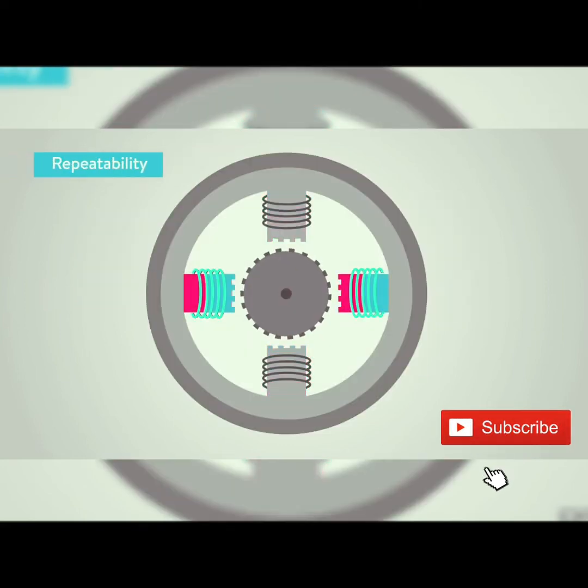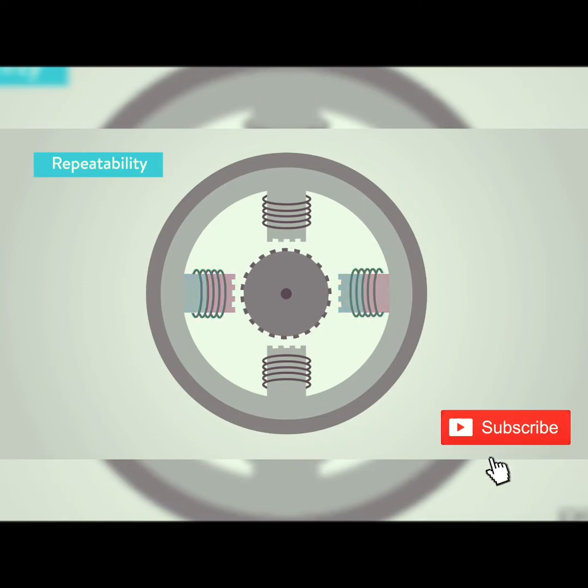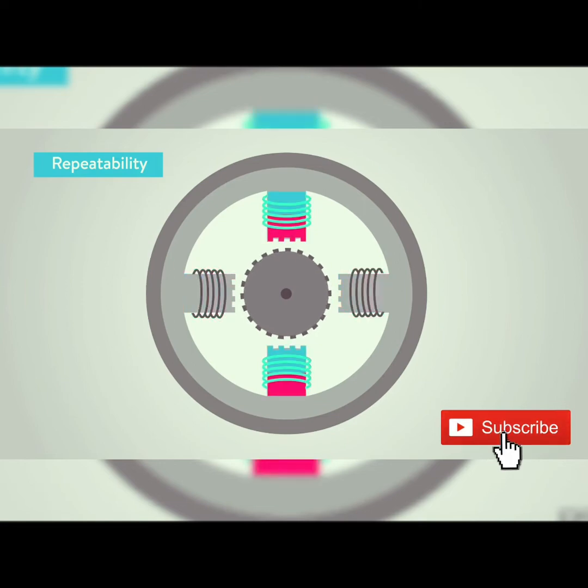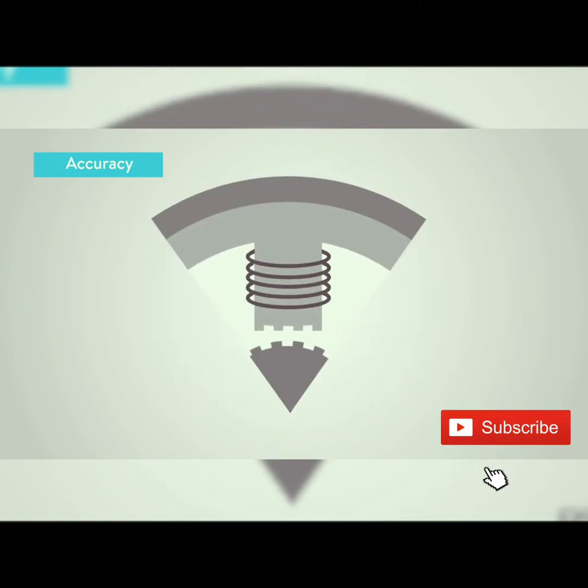What is repeatability and accuracy? Repeatability is a drive mechanism's ability to return to the same position multiple times under identical conditions. Accuracy, however, is the degree in measurement for motion can be determined to which the final position matches the commanded position.